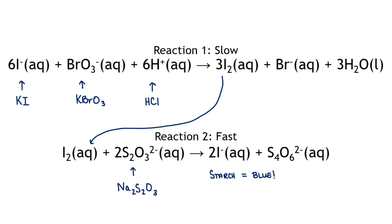We will carry out the experiment by combining the iodide ions, the hydrogen ions, the thiosulfate ions, starch, and enough water to make all of the volume levels equal. We will then stir our reactants and add potassium bromate last.